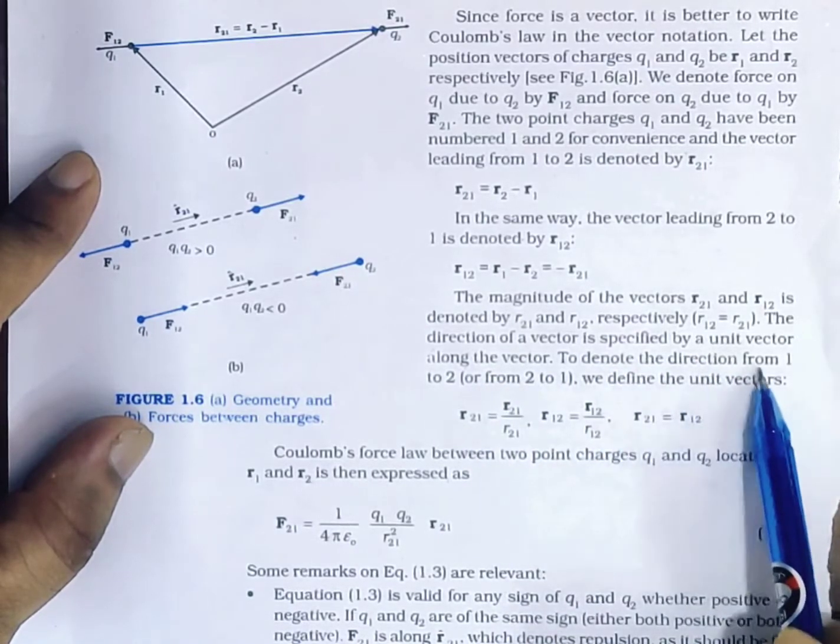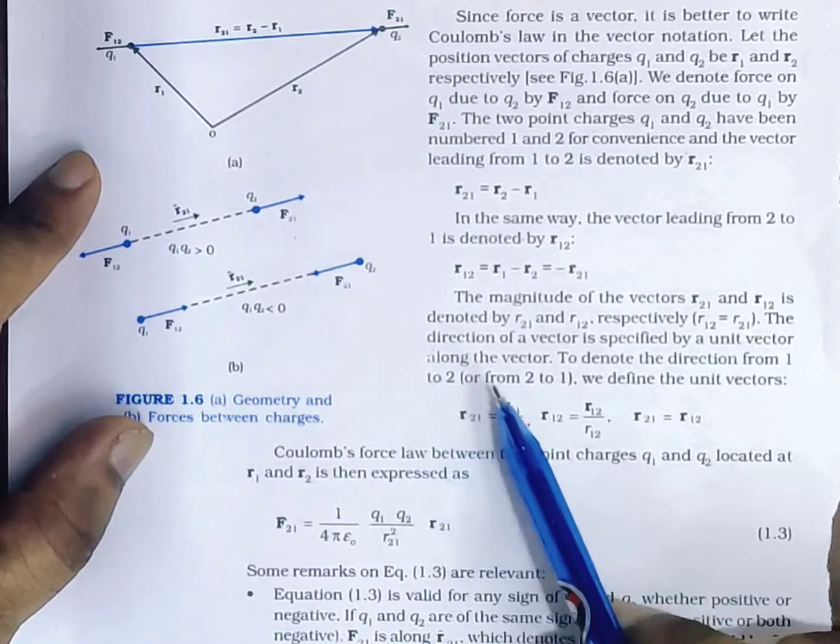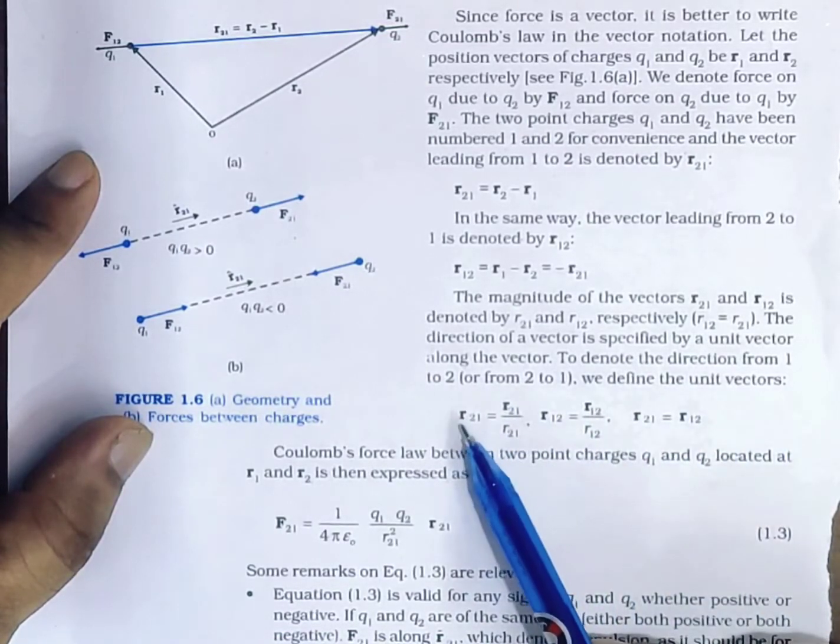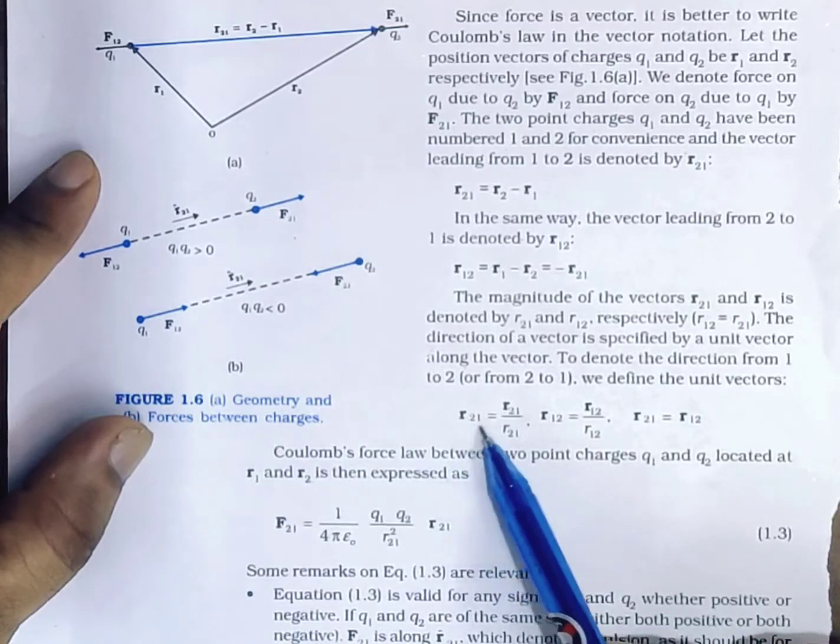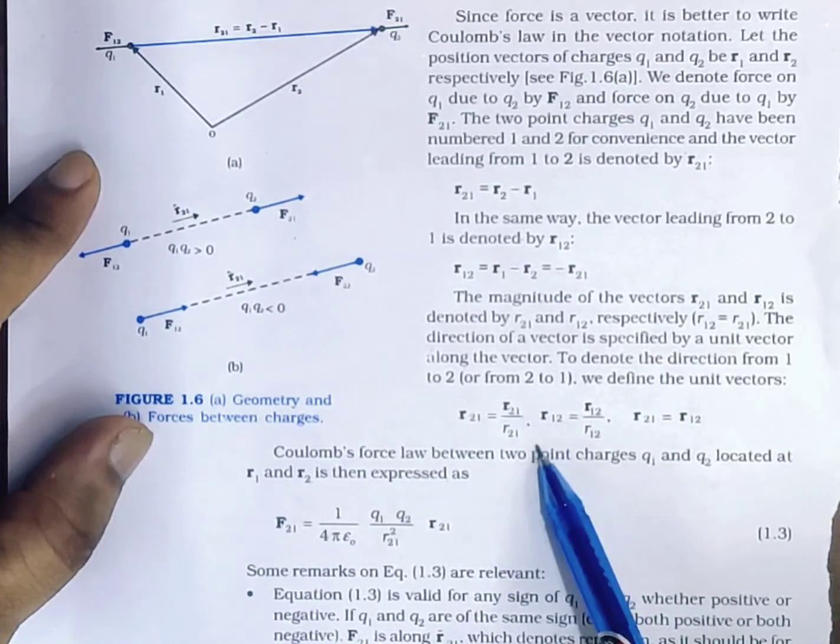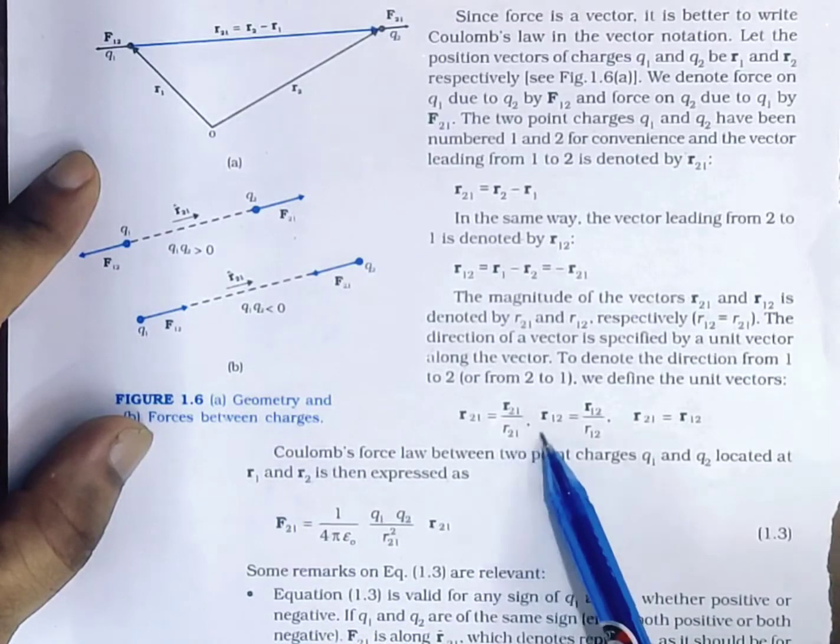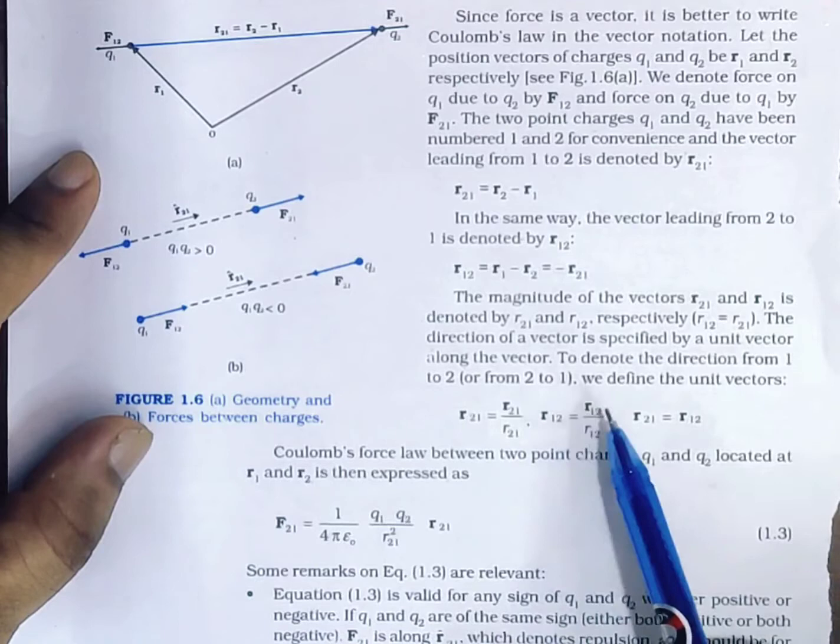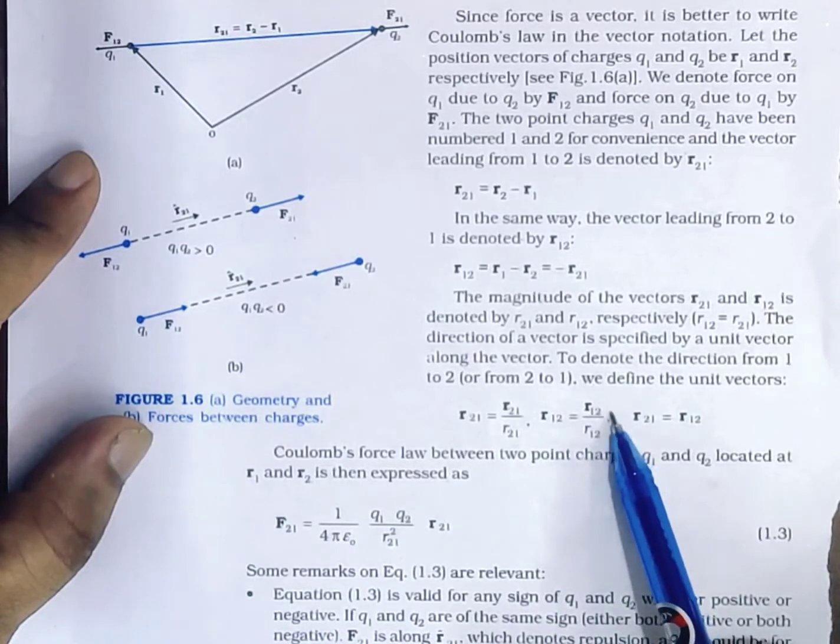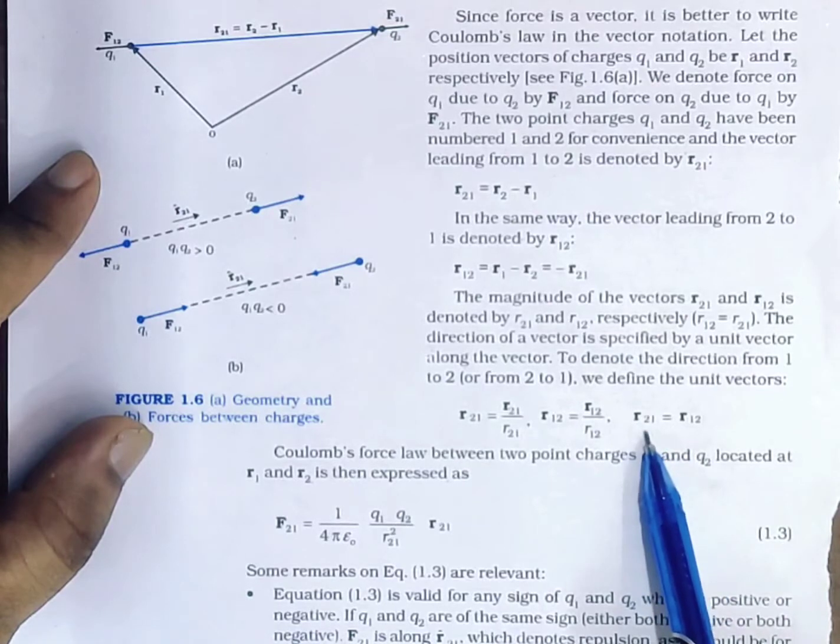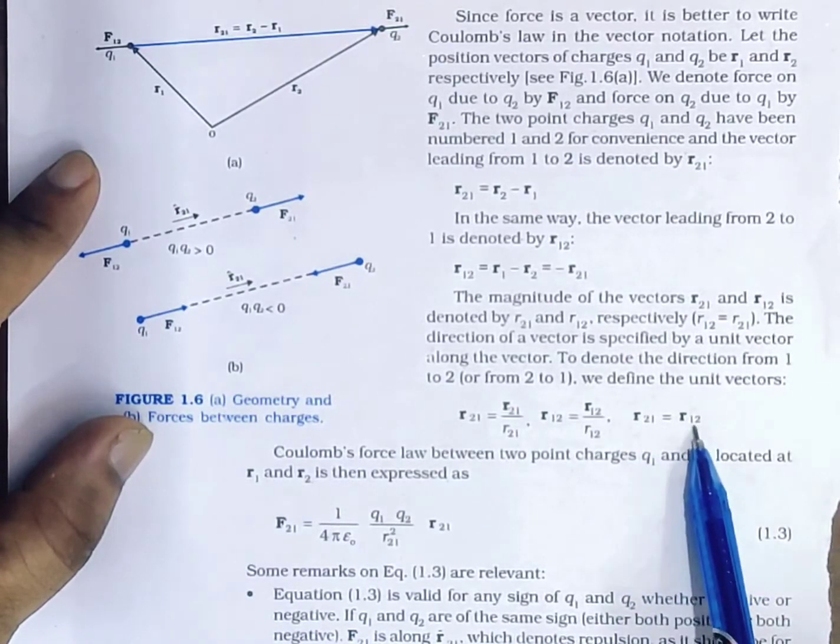To denote the direction from 1 to 2 or from 2 to 1, we define the unit vectors. Unit vector r̂21 equals vector R21 divided by r21, that is its magnitude. Similarly, unit vector r̂12 equals vector R12 divided by its magnitude.